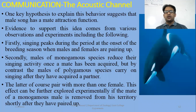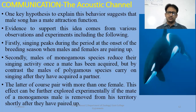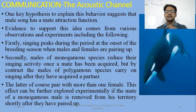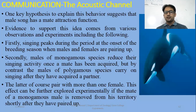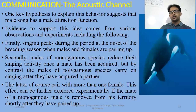Firstly, singing peaks during the period at the onset of the breeding season when males and females are pairing up. Secondly, males of monogamous species, which pair up throughout life with about 80 birds, reduce their singing activity once a mate has been acquired. But by contrast, the males of polygamous species, which pair with different female birds in every season, carry on singing after they have acquired a partner. After that partner, the pairing continues and they change mates — that's why they continue their singing as well.